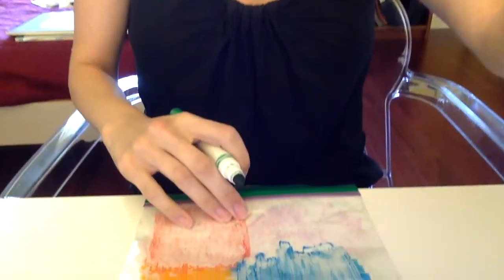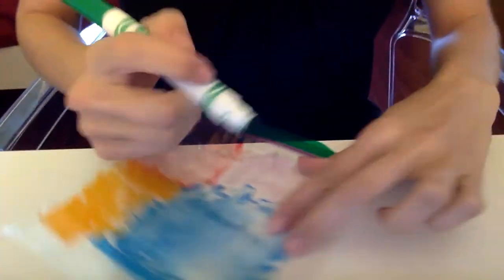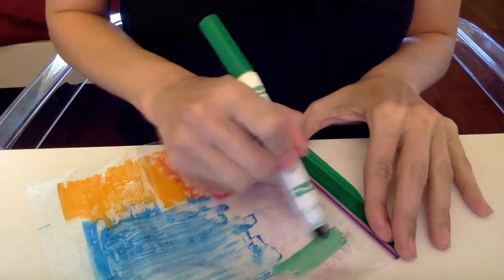All right. So I'm going to reuse a bag that I had been using already. So it has color on it, but that's okay. I'm going to tilt this to show you. All right. So we're going to color in an area with a lot of ink.